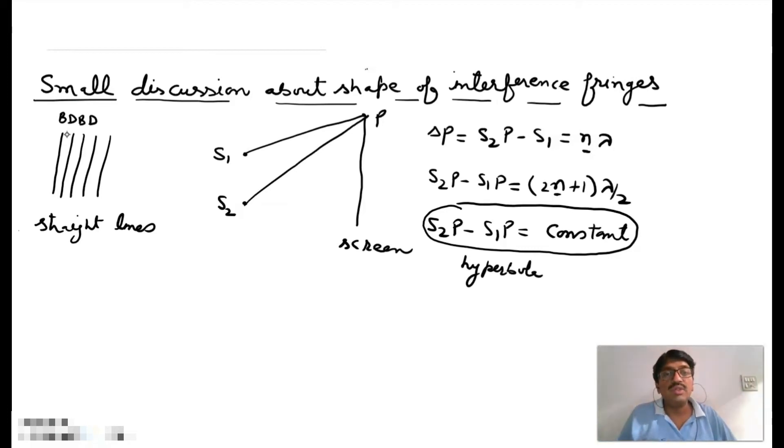And with the foci at S1 and S2, it means actual shapes of fringes are... This is S1, this is S2, shapes of actual fringes are like this. These are the shapes of actual fringes.